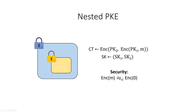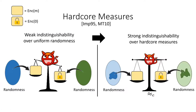In nested public key encryption, our ciphertext is formed by first encrypting under one public key, and then encrypting this encryption under a second public key. The secret key is simply the two individual secret keys. Security is the standard notion that the encryption of a message M should be indistinguishable from an encryption of zero. To prove security, we will rely on hardcore measures.